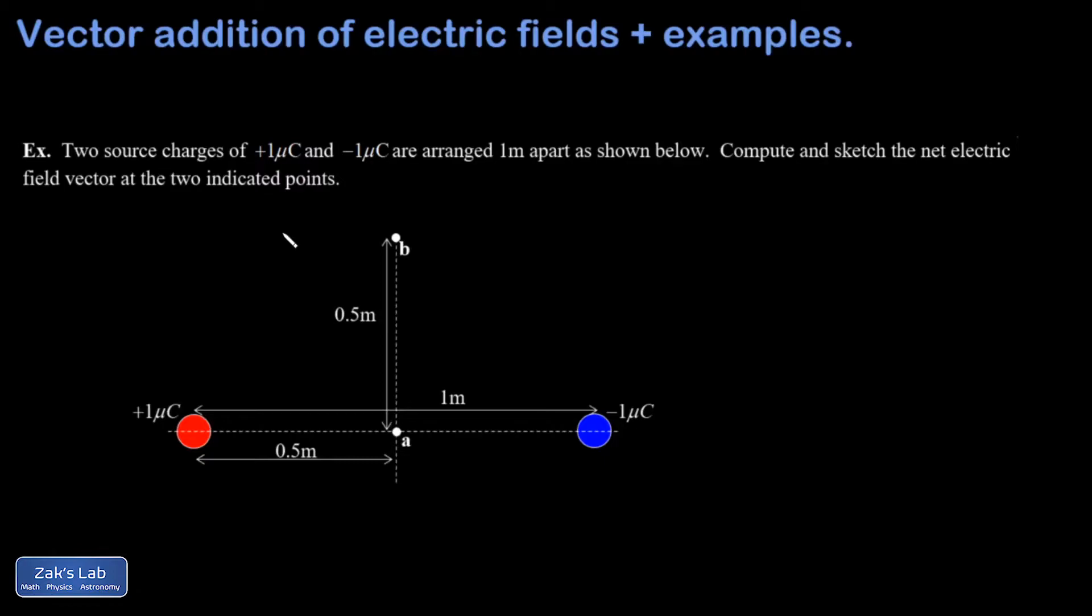Then in a follow-up example, we're going to look at graphing the electric field lines for a dipole field based on qualitative arguments about the electric fields from each source adding together.